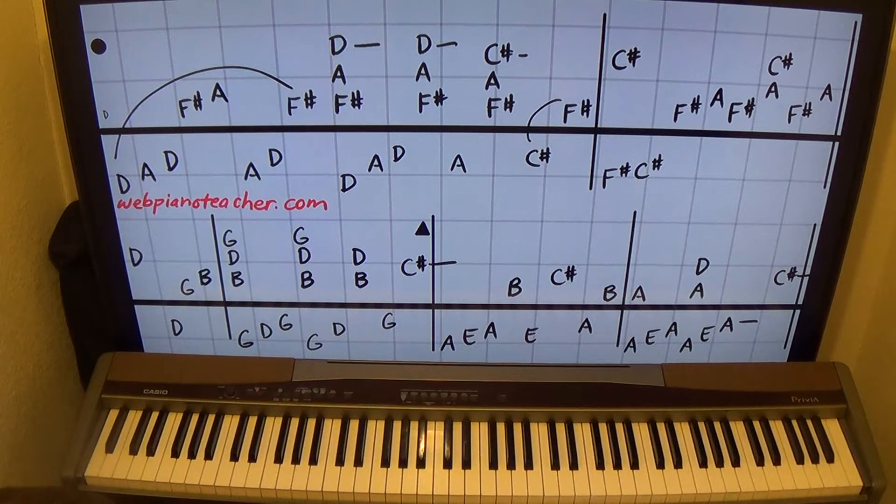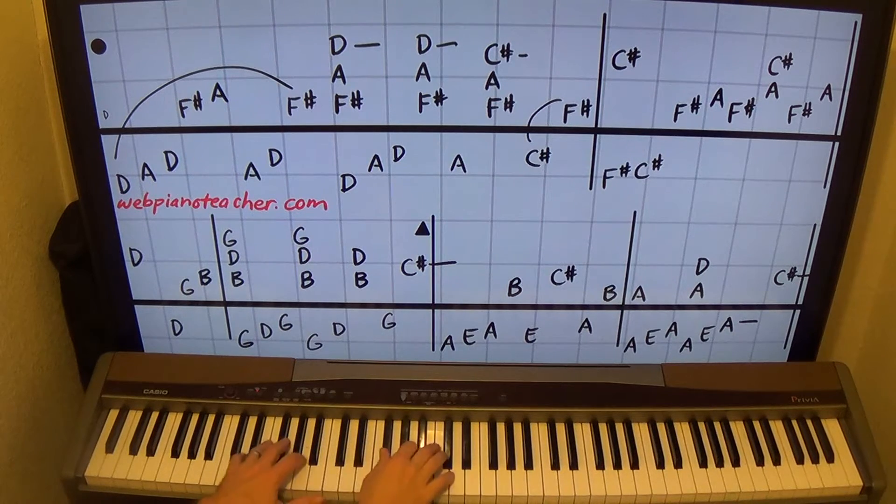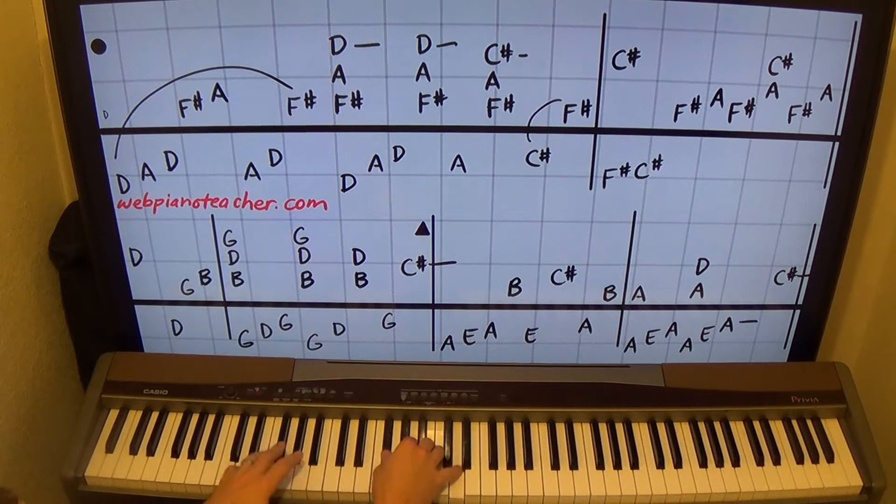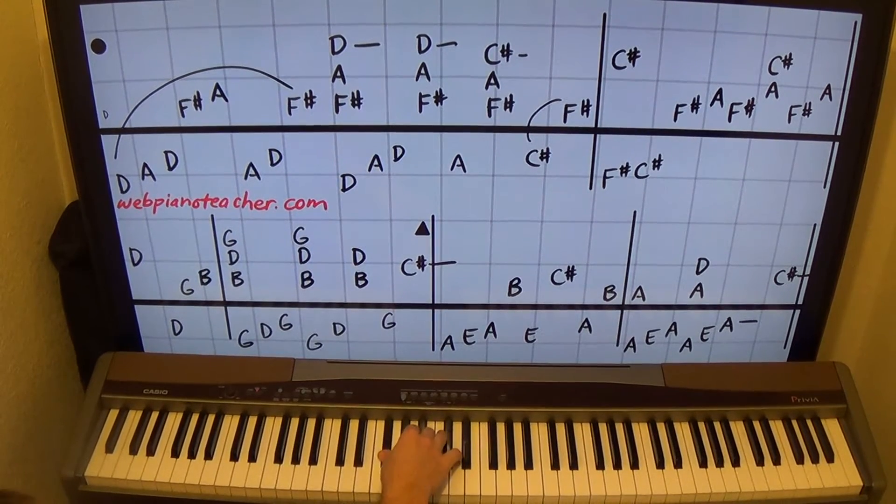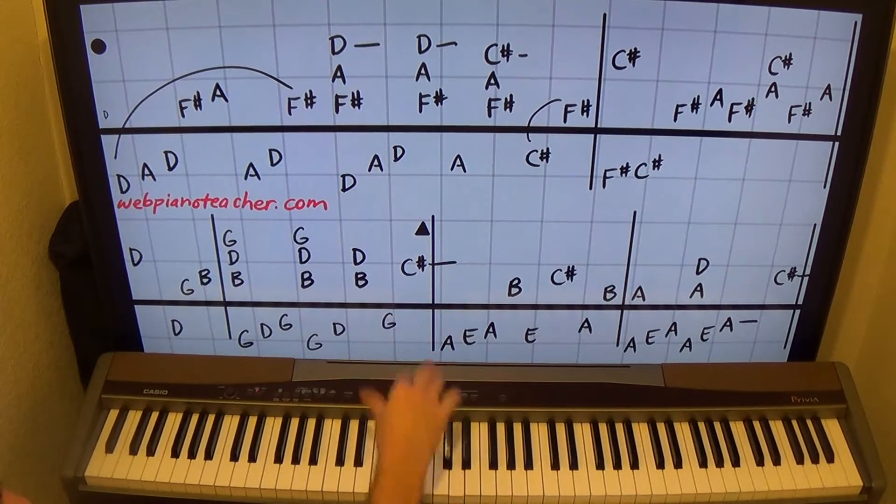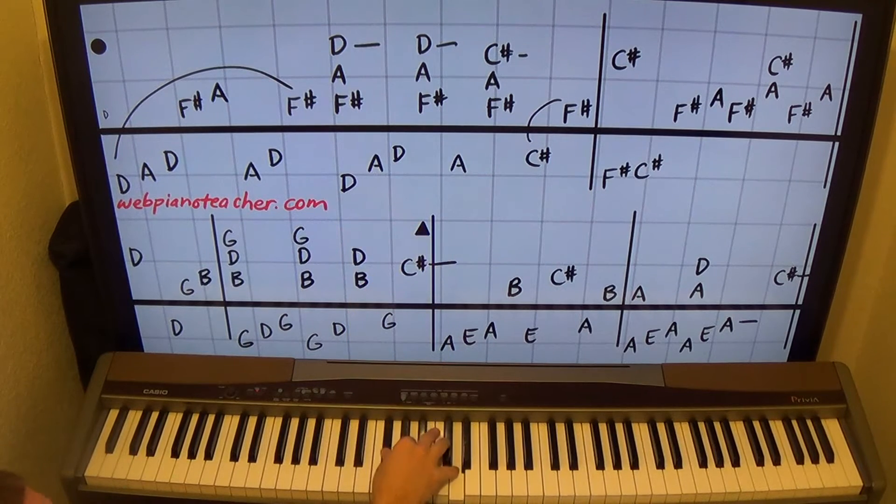Sometimes there's a held quarter note. 1 and 2 and 3 and 4 and 1. For this next, really the next measure here, it's F sharp, A, D. That's a whole D chord. I'll use 1, 2, 5. Play it again.